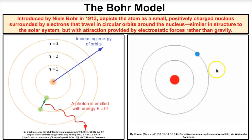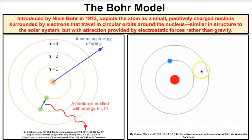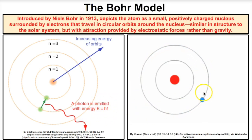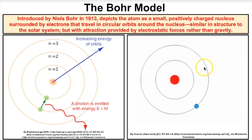The amount of energy released can be measured using the formula E = hf — Planck's constant times the frequency of that photon. We covered that in an earlier video. So that's the Bohr model of the atom.